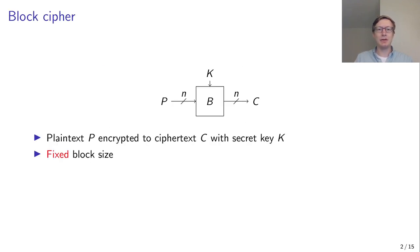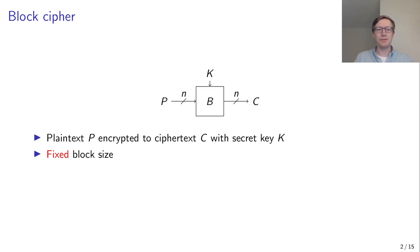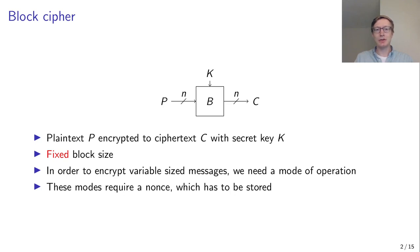A very commonly used primitive in symmetric cryptography is of course the block cipher. It encrypts some plaintext into some ciphertext under a secret key. However, it has a fixed block size, like 128 bits for example. And if we want to encrypt a variable-sized message, we need some kind of mode of operation.